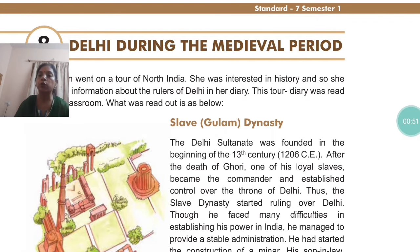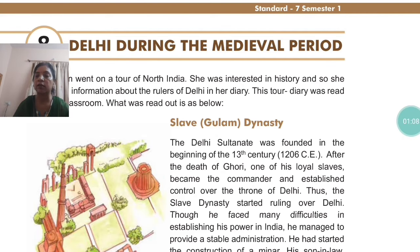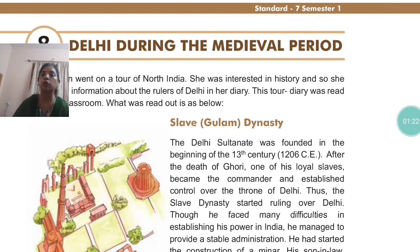Delhi was ruled by many dynasties, by many kings. As you all know, children, India was called the golden bird in the ancient times. Everyone wanted to rule over India. Let us see which rulers ruled India during the medieval period.